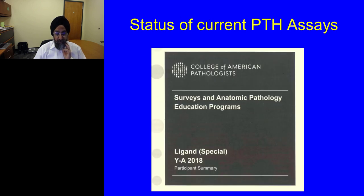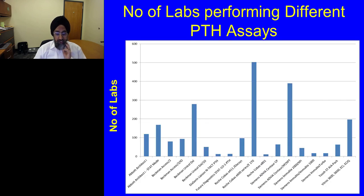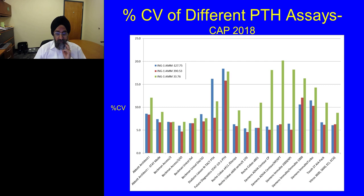I'm going to review some CAP (College of American Pathologists) data for PTH assays from their 2018 survey. This slide shows how many labs are performing a particular manufacturer's assay. Out of approximately 1,500 labs, about 500 are performing Roche-Cobas assay, and close to 400 are performing Siemens. Many manufacturers are in this field, and different labs have chosen different manufacturers based on their own experience and assay quality.